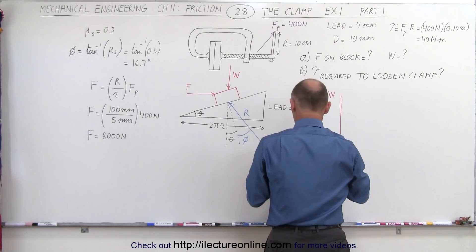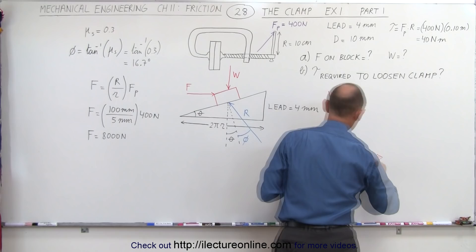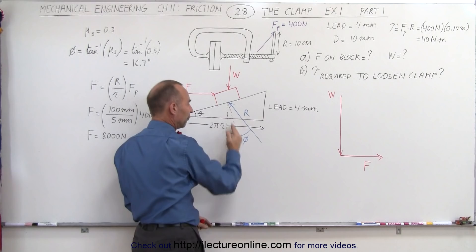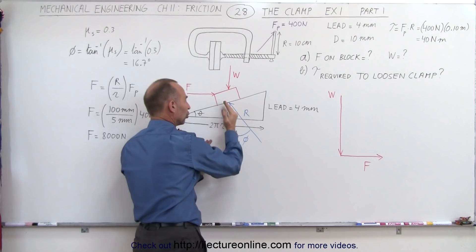Now we also have the force applied to the screw, which we calculated right here. And then we have the reactionary force right here, which is caused by the normal force on the surface and the friction. So it's the vector sum of the friction and the normal force on the surface. And so that's going to be the reaction force right here.